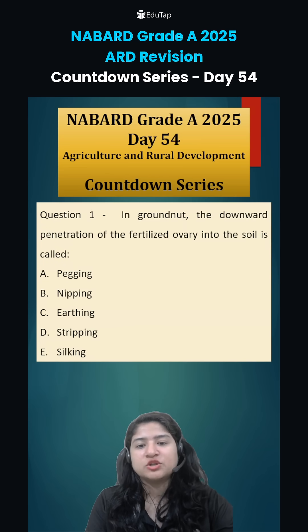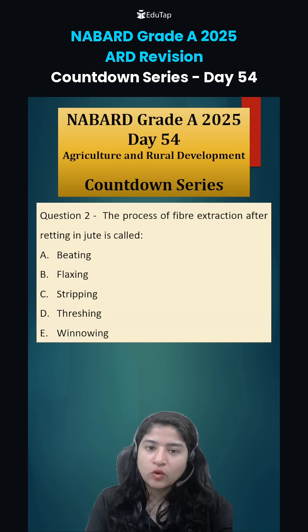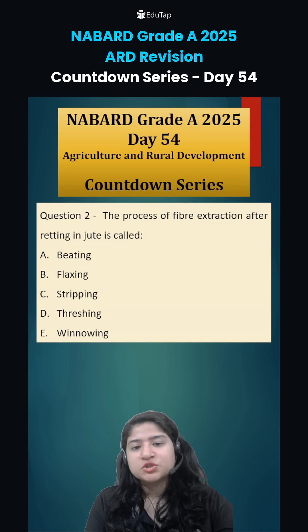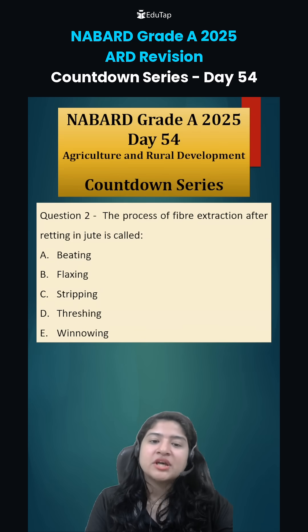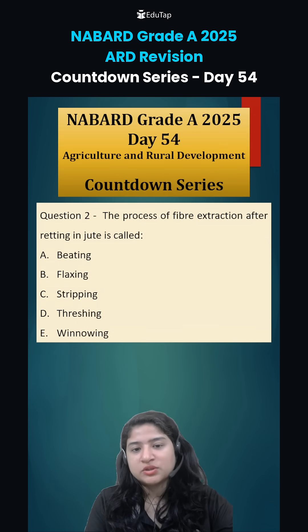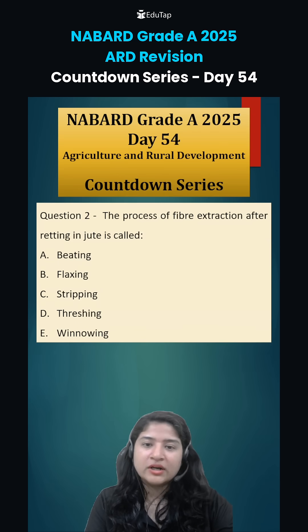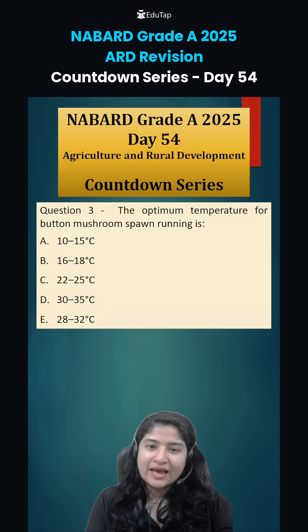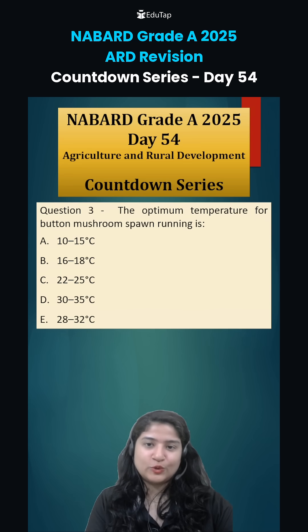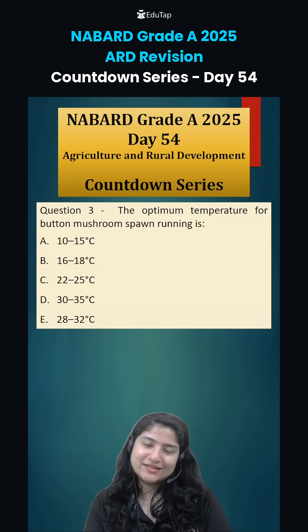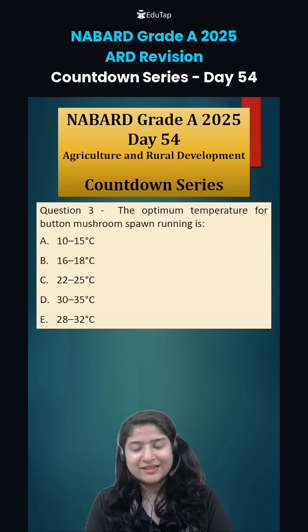Now coming to today's questions. Question one: in groundnut, the downward penetration of the fertilized ovary into the soil is known as what? Question two: the process of fiber extraction after retting in jute is called what? Question three: what is the optimum temperature for button mushroom spawn running? Comment down your answers and we will discuss in the next class. Thank you.